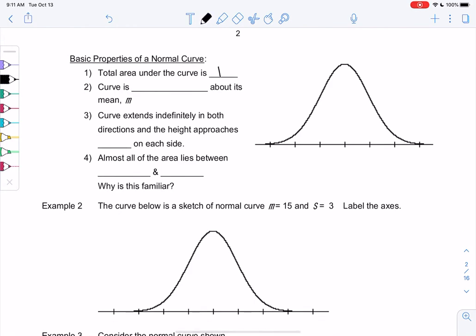Basic properties of a normal curve. Total area is one, and that's because we're doing 100% for probability. So the curve represents everything, so one would represent everything. The curve is centered about its mean, or mu, so that tells me that mu is right in the center, right at that peak that's right in the middle of the graph. And then the curve extends indefinitely in both directions as the height approaches zero on each side. So you'll notice it gets flat. That's what I mean by the height approaching zero.